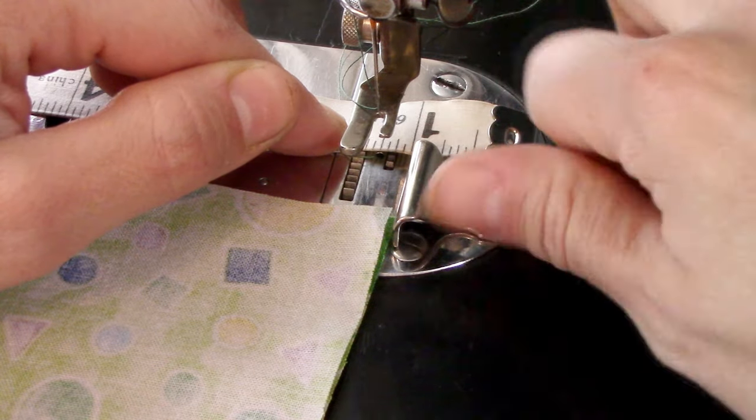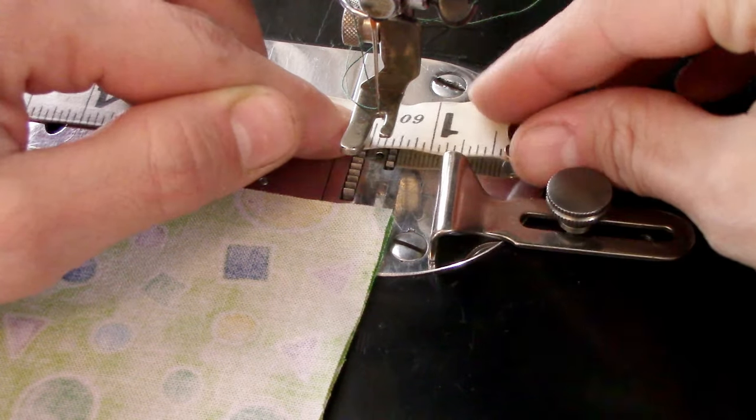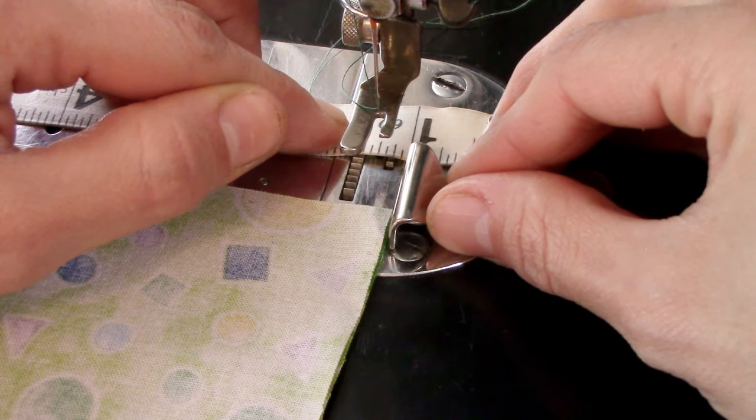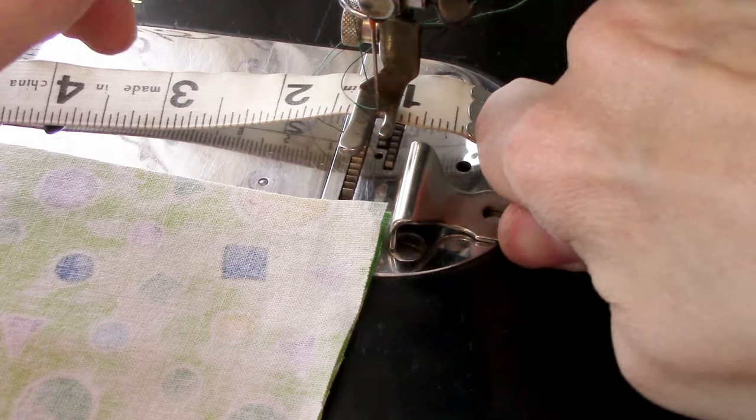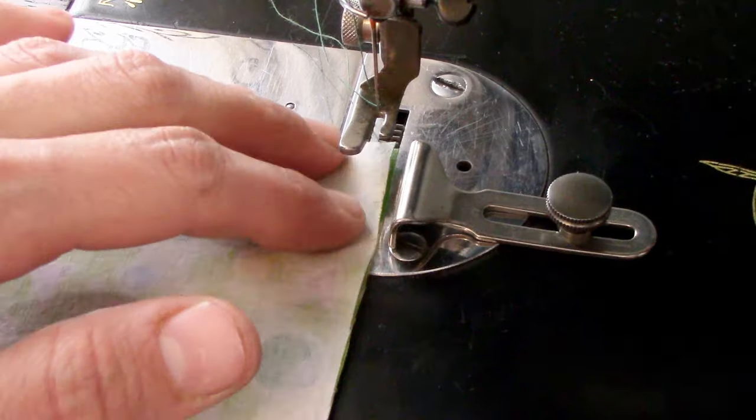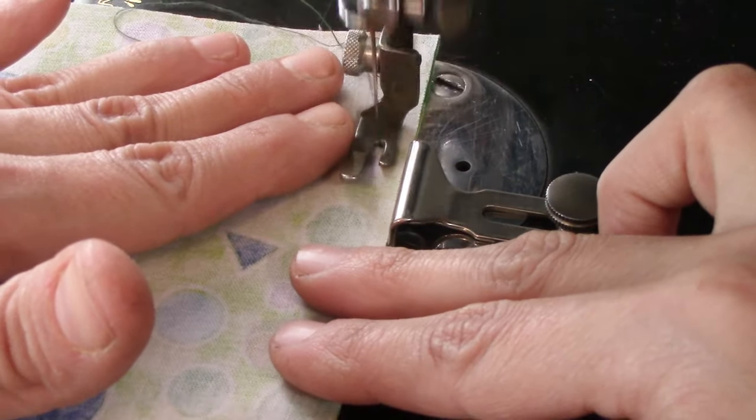The purpose of the seam edge guide is to ensure a uniform stitch line from the edge of your fabric to a predetermined distance. It screws down to the bed of the machine and can be slid nearer to or further from the needle before being fully tightened. When running fabric through your machine, allow it to pass comfortably against the guide and you can be sure of a consistent seam width.